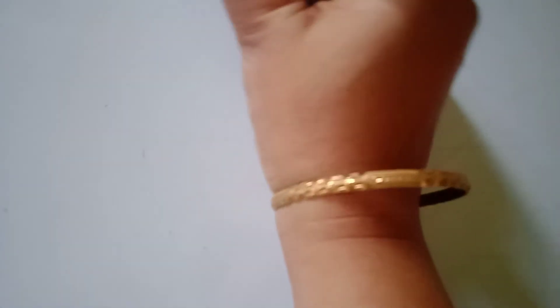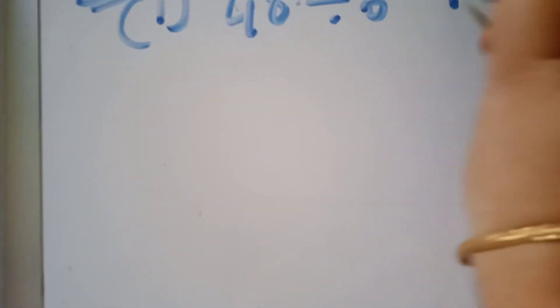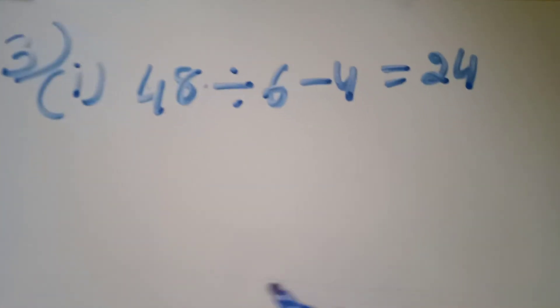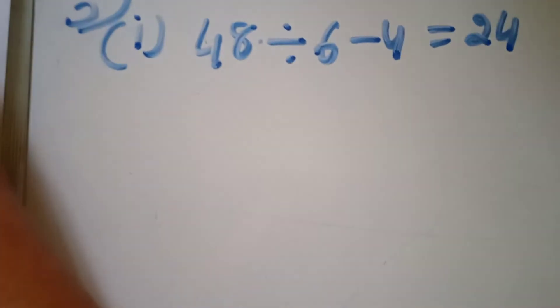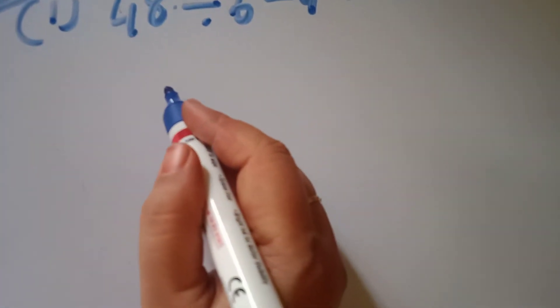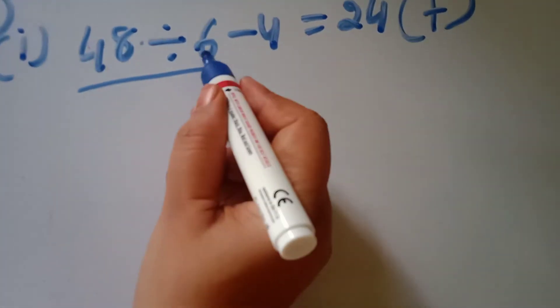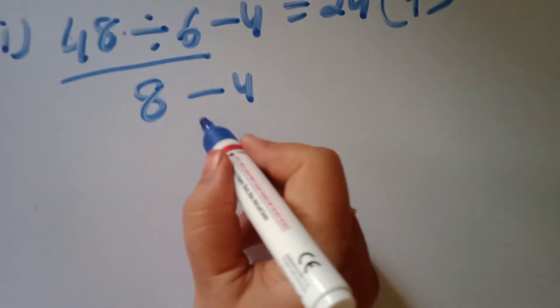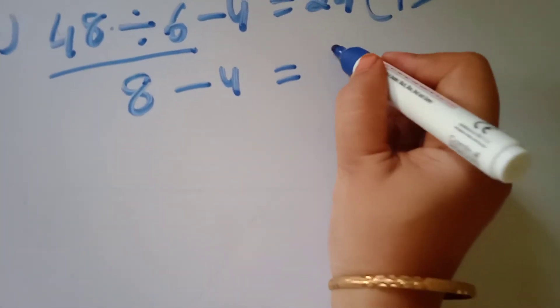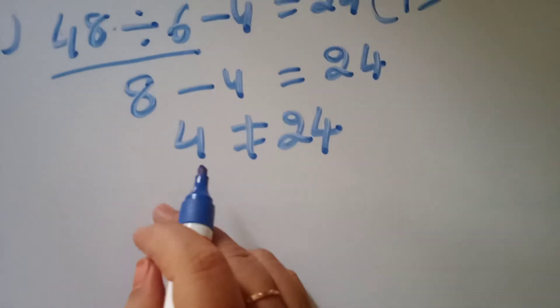Identify the true statement. First: 48 is divided by 6 minus 4 equal to 24. Is this true or false? False. First divide: 48 divided by 6 equals 8, then 8 minus 4 equals 4. So 4 is not equal to 24. This statement is false.